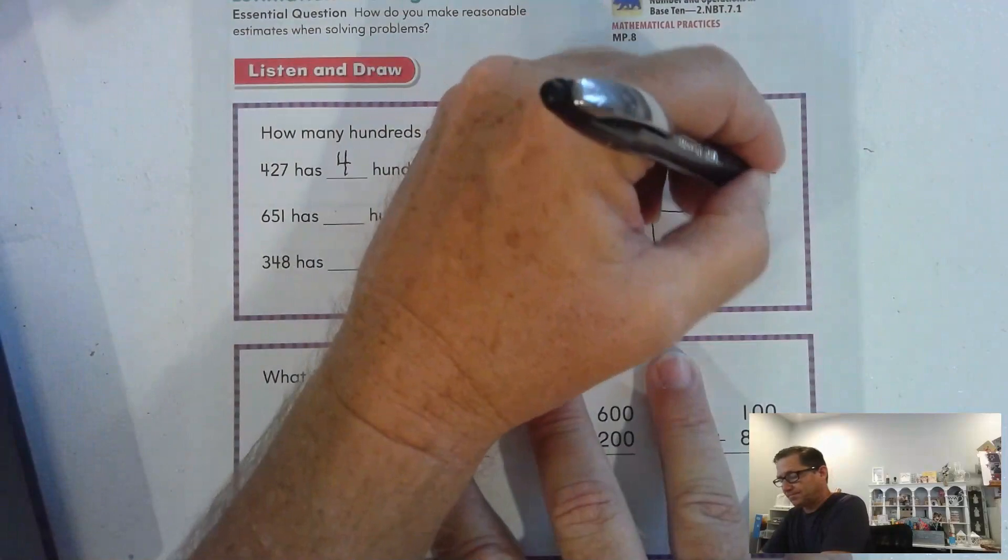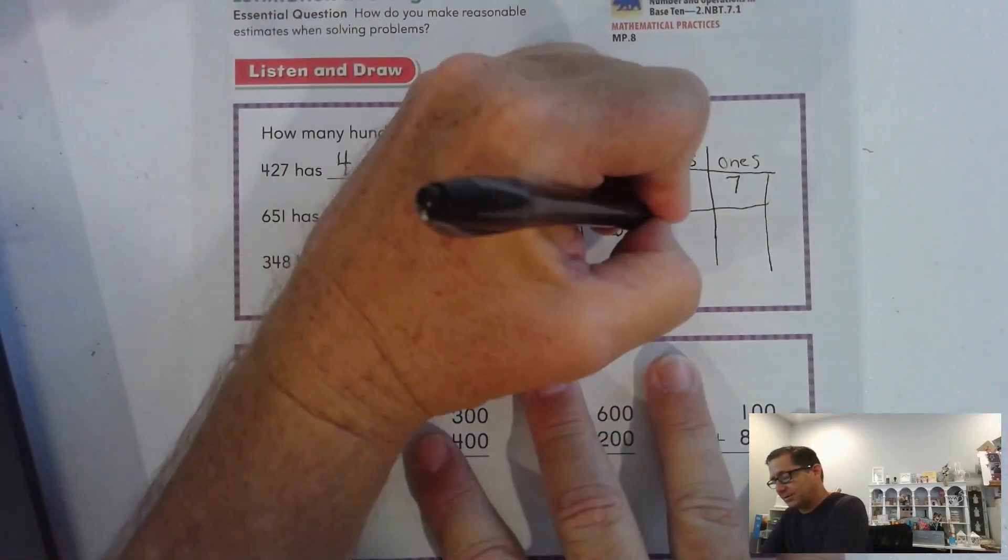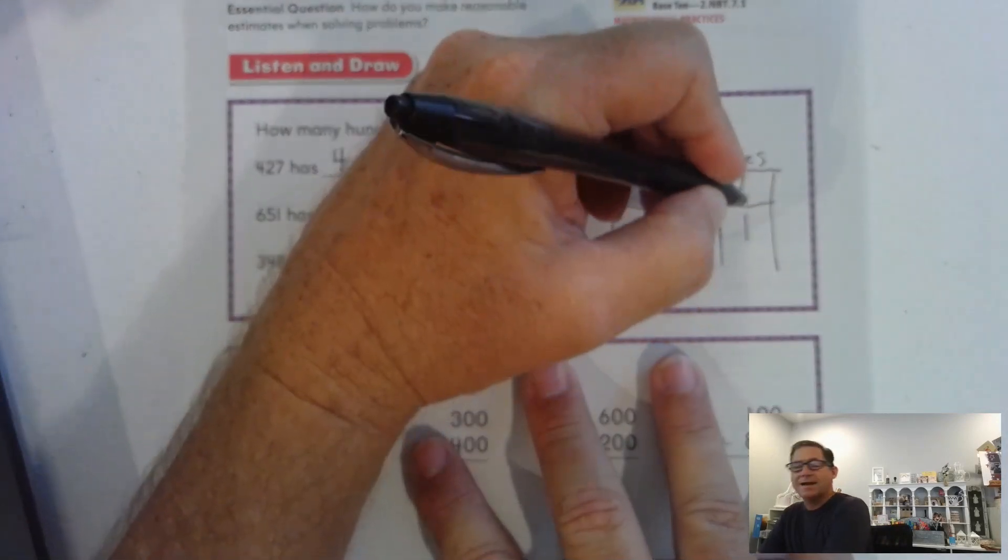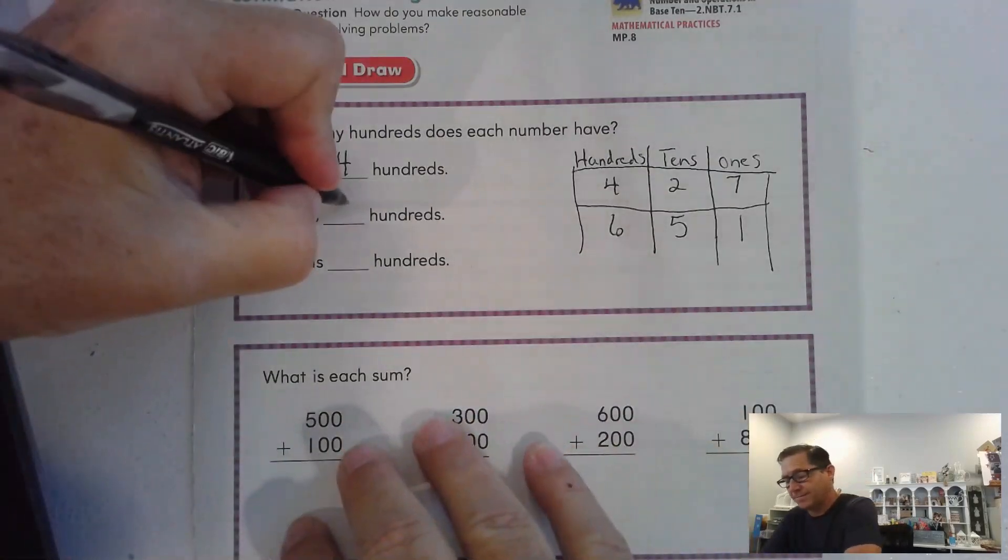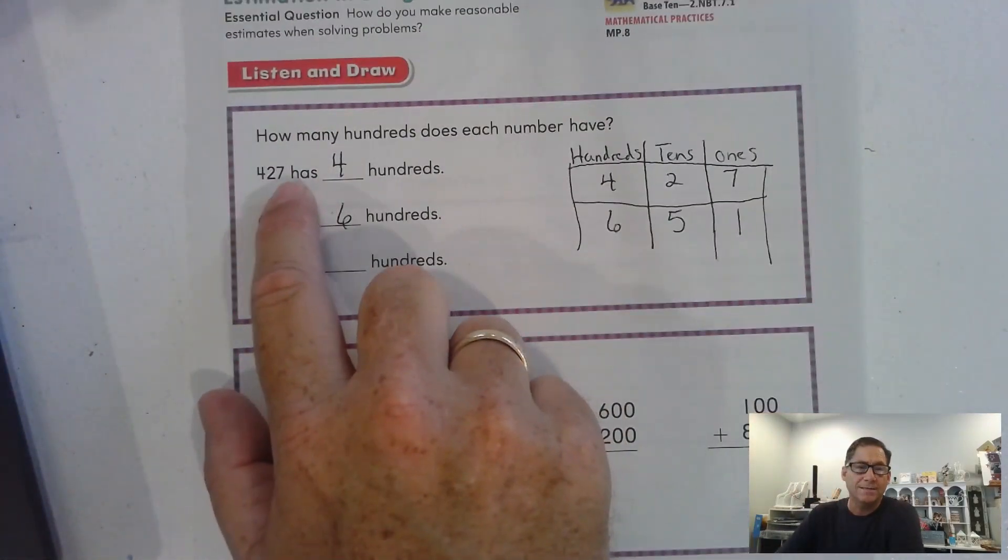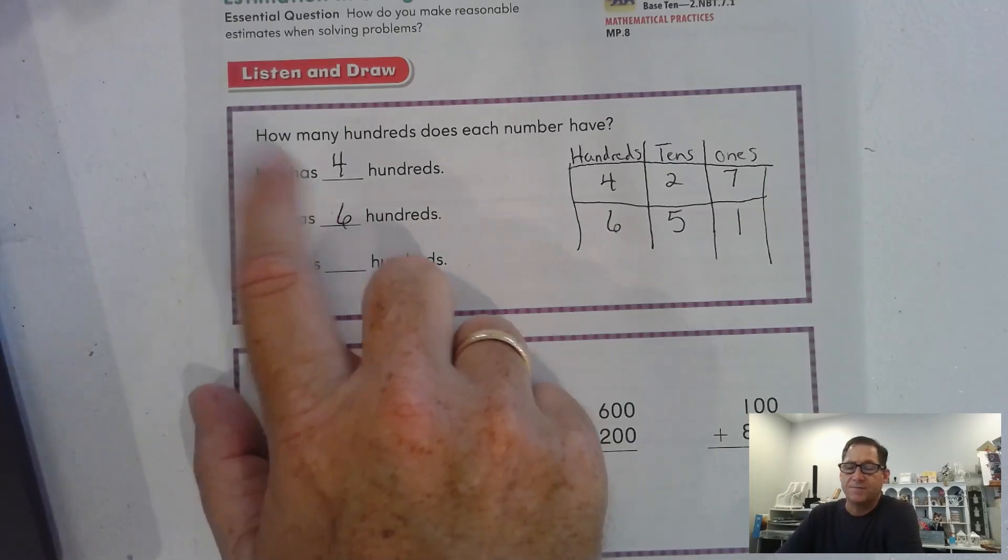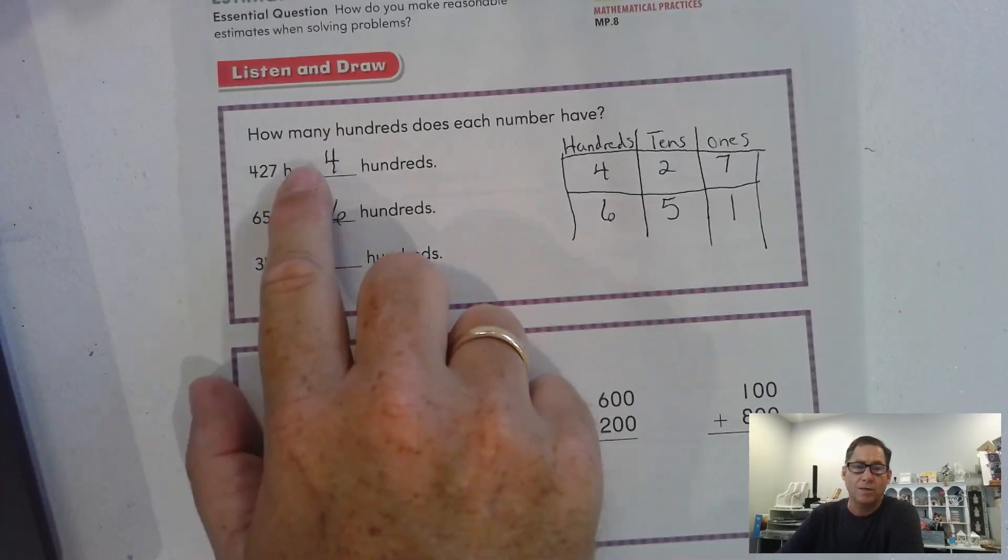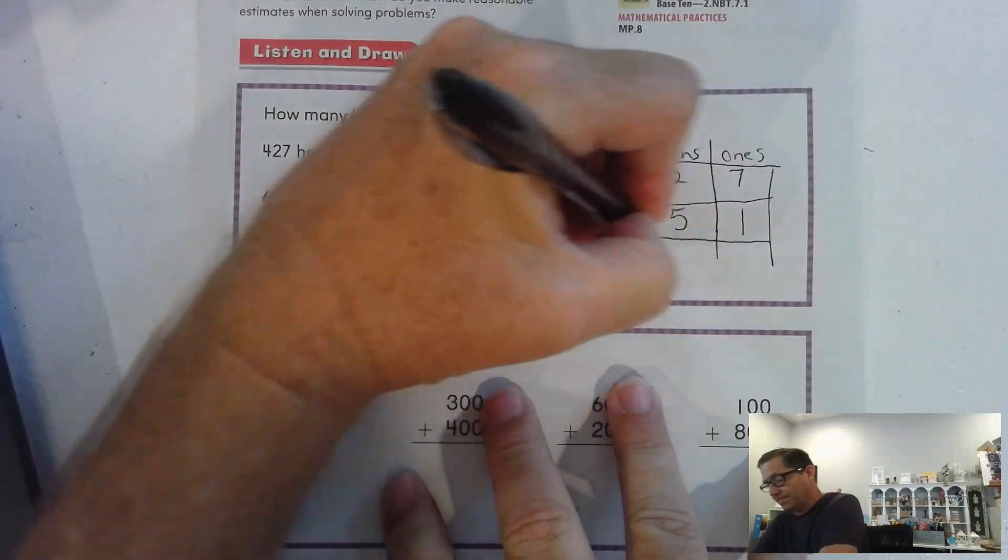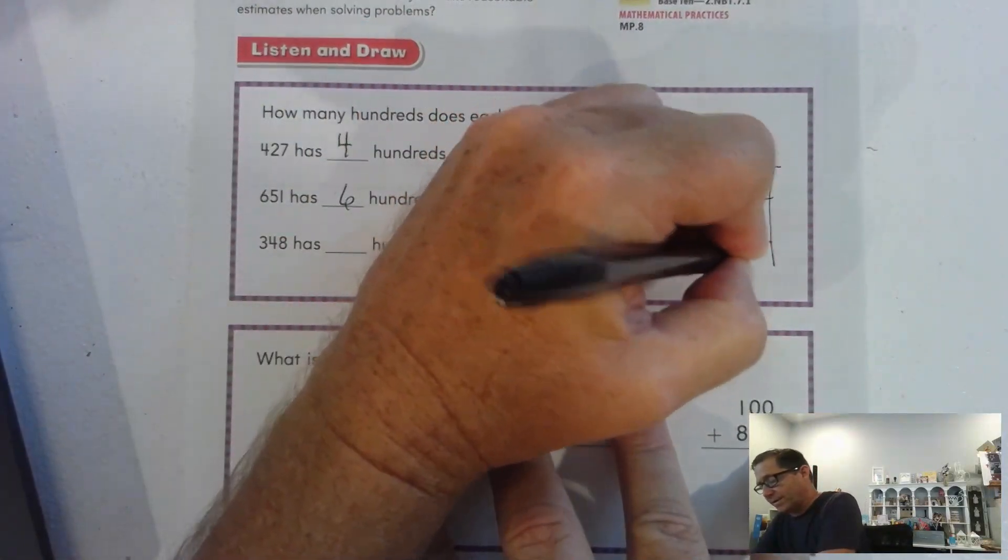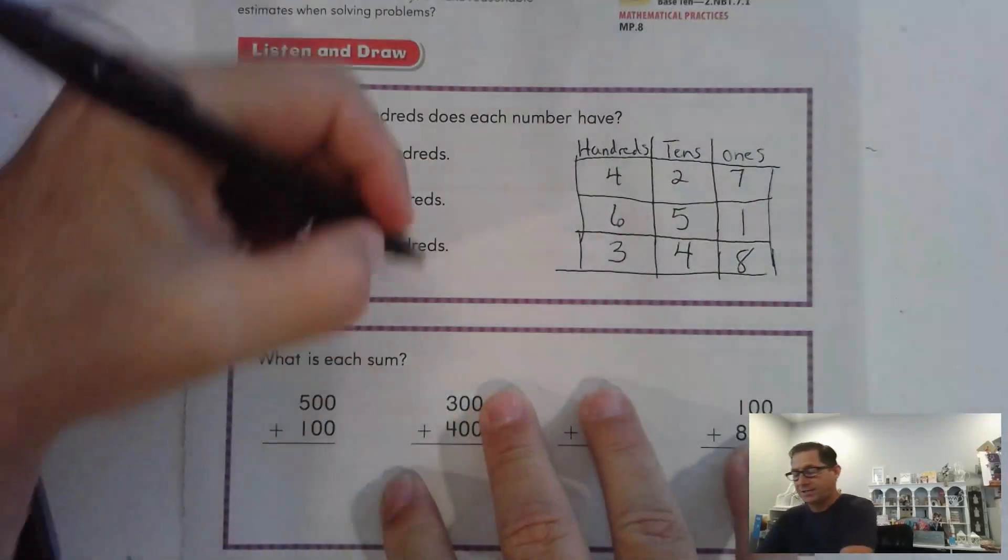How about our next one? 651. How many hundreds does that number have? 600. So basically, ones, tens, hundreds. The hundreds are always the third digit from the right. Ones, tens, hundreds. 348. How many hundreds are in 348?